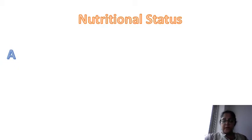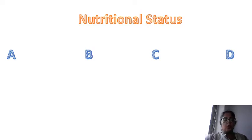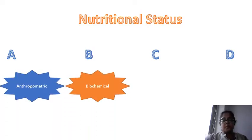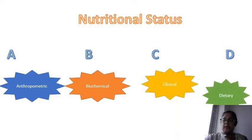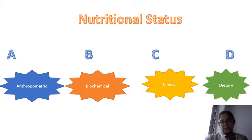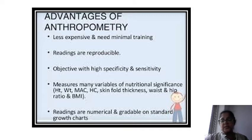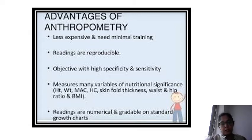Nutritional status is divided into A, B, C and D methods. A stands for anthropometric measurements, B for biochemical measurements, C for clinical, and D for dietary measurements. Now, about the anthropometric measurements — what is basically anthropometry? Before moving to that, we will learn about the different advantages of anthropometry.